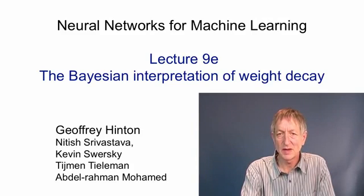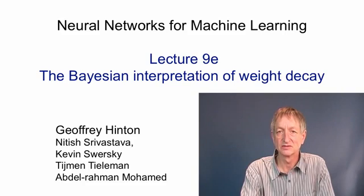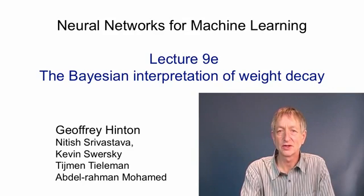In this video, I'm going to talk about the Bayesian interpretation of weight penalties. In the full Bayesian approach, we try to compute the posterior probability of every possible setting of the parameters of a model. But there's a much reduced form of the Bayesian approach, where we simply look for the single set of parameters that is the best compromise between fitting our prior beliefs about what the parameters should be like and fitting the data we've observed. This is called maximum a posteriori learning, and it gives us a nice explanation of what's really going on when we use weight decay to control the capacity of a model.